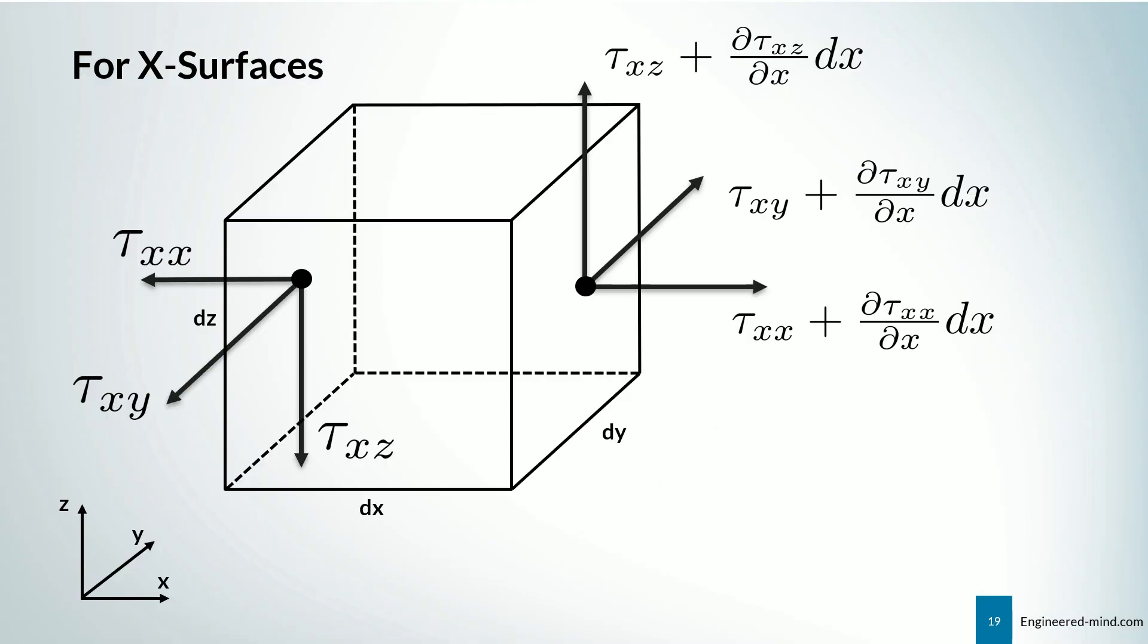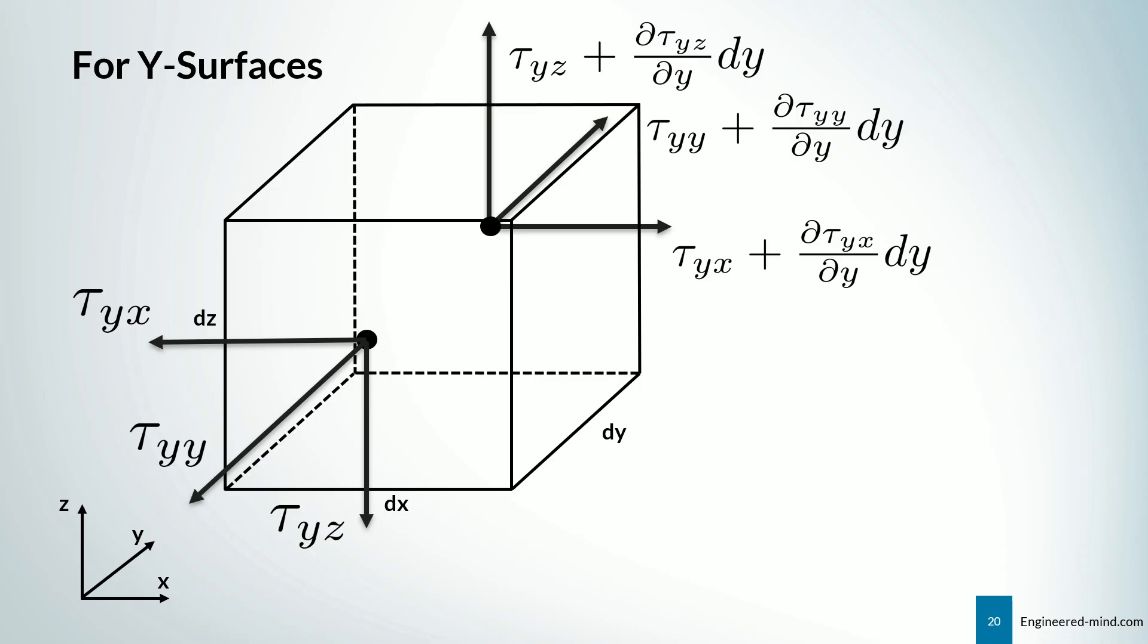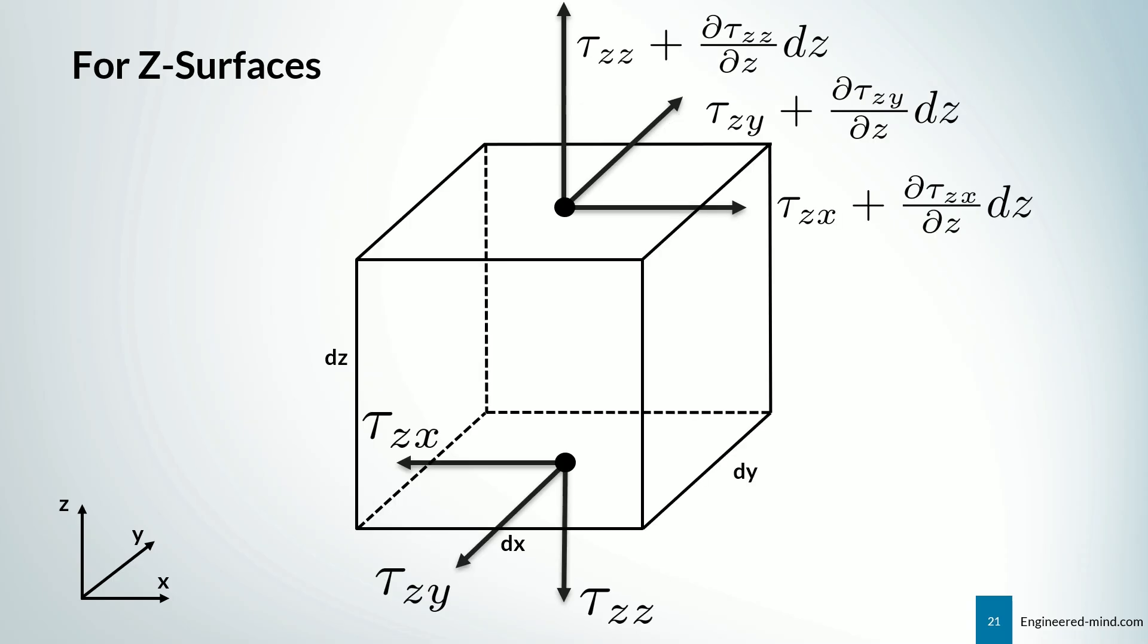So here you can see the normal and shear stresses indicated by tau xx, tau xy, tau xz, and the changes along the direction. The same goes for the y surfaces, as well as the z surfaces.